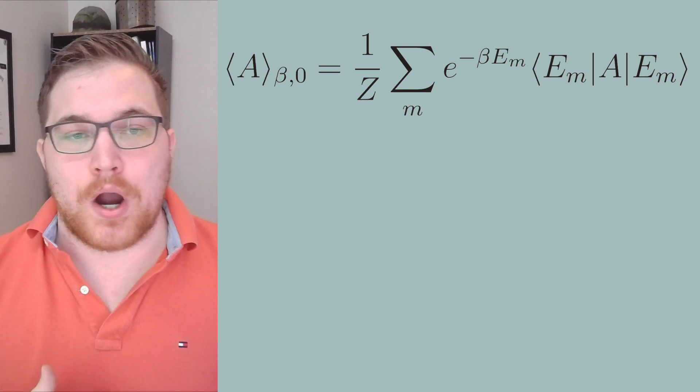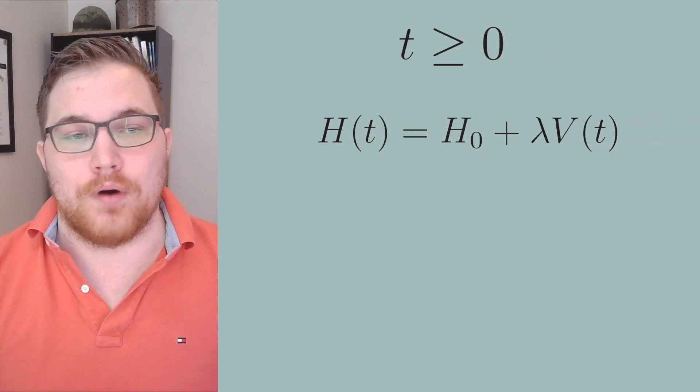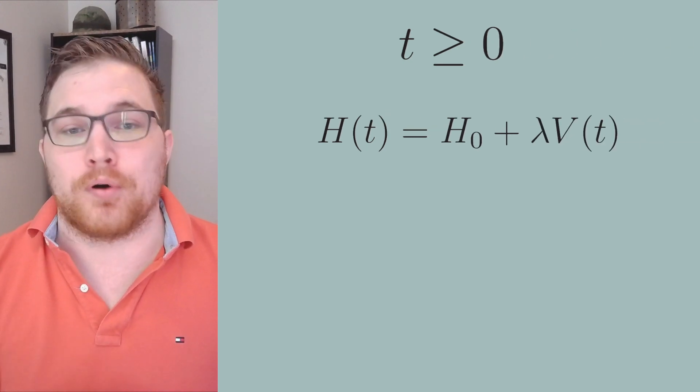So as of now, our state rho and our observable A are time independent. But let's say at t equals zero, we will turn on a brand new, potentially time dependent external perturbation.